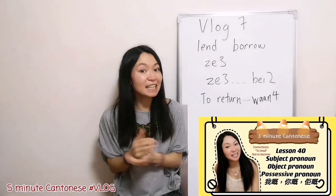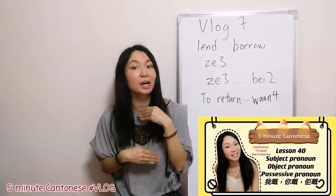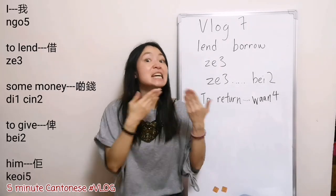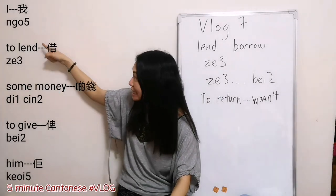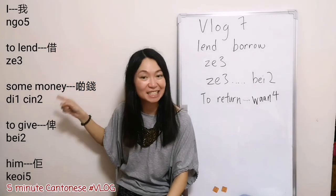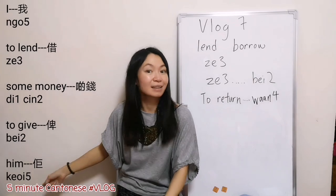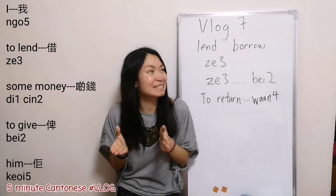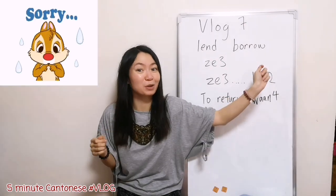In the later lesson, I try to use the same example to explain the object pronoun. For example, I lend him some money. 我借 some money. And then to give. 給 him. However, in that lesson, I said to borrow.